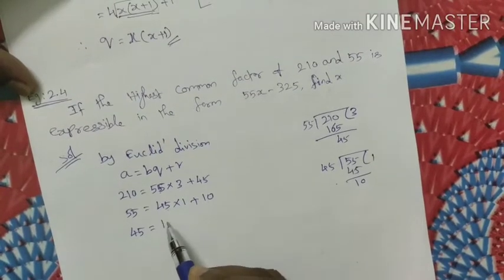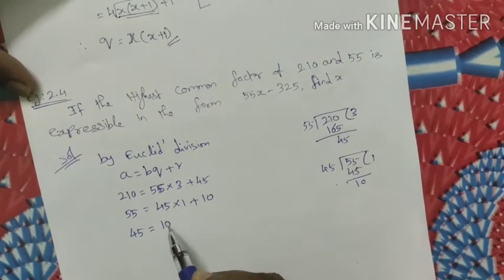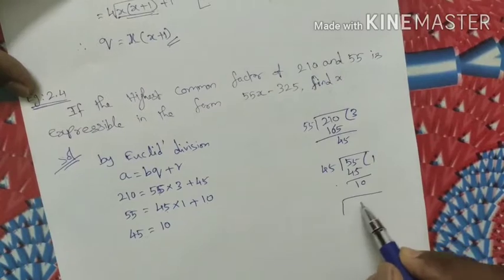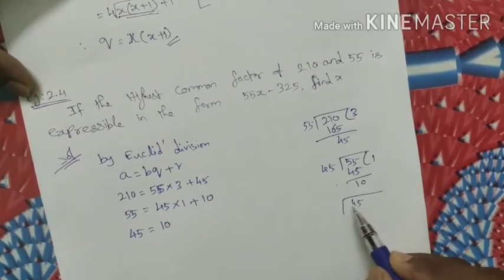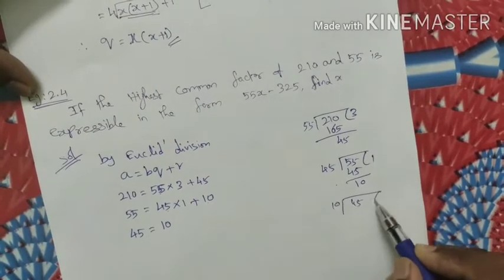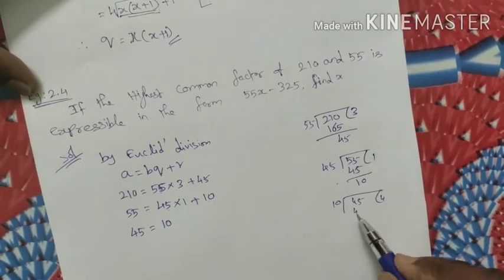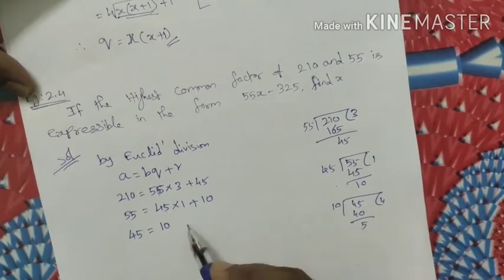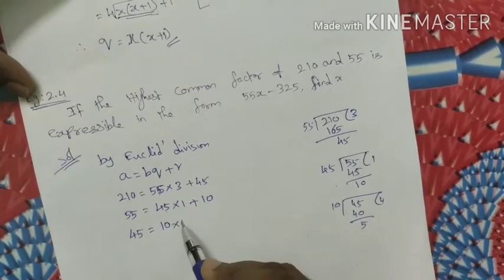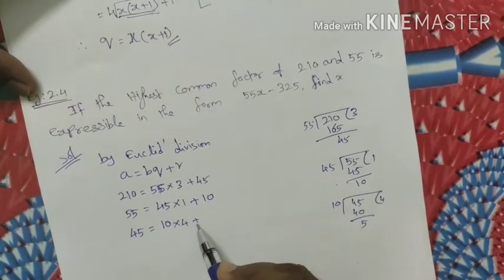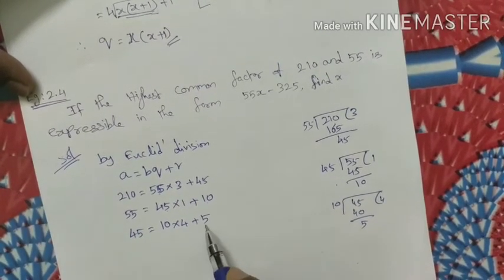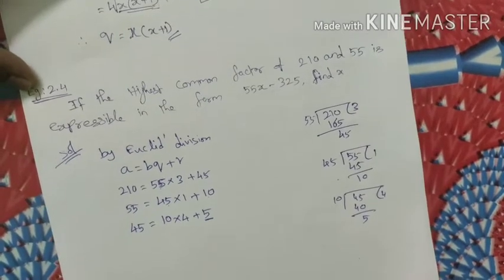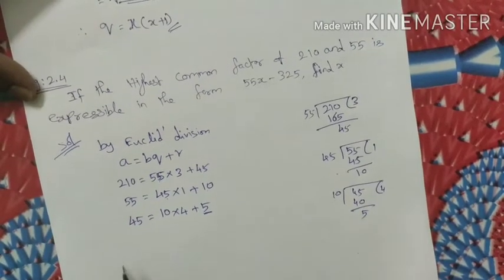45 divided by 10: how many times is 10 possible in 45? We get 4 times. Four times 10 is 40, and the remainder is 5. So 45 equals 10 into 4 plus 5. The remainder is still not zero, so the process continues.